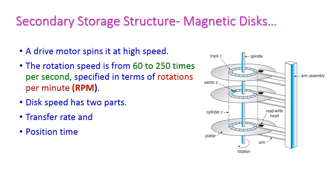When a magnetic disk is in use, the drive motor spins it at very high speed — from 60 to 250 times per second. This speed is specified in terms of rotations per minute, otherwise known as RPM.